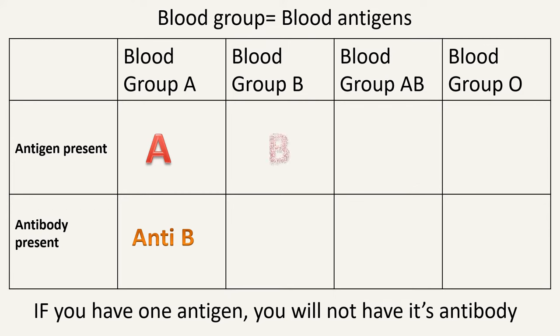Similarly, a person having blood group B will have antigen B and they will have antibody against antigen A. A person who has blood group AB will have both the antigens. Since both the antigens are self antigens, it will not have any antibodies.